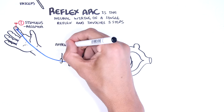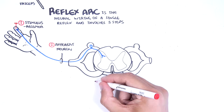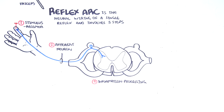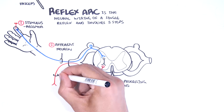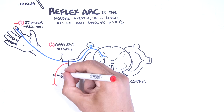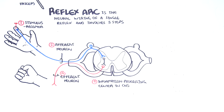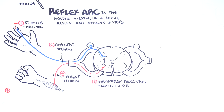The afferent neuron, the sensory neuron, transmits the impulse through the peripheral nerve to the central nervous system. The central nervous system is where information processing occurs. The afferent neuron synapses with an efferent neuron, or an interneuron, which will then relay information to the efferent neuron. The efferent neuron is the motor neuron, which exits the spinal cord and delivers the signal to an effector, which is the muscle or the gland.